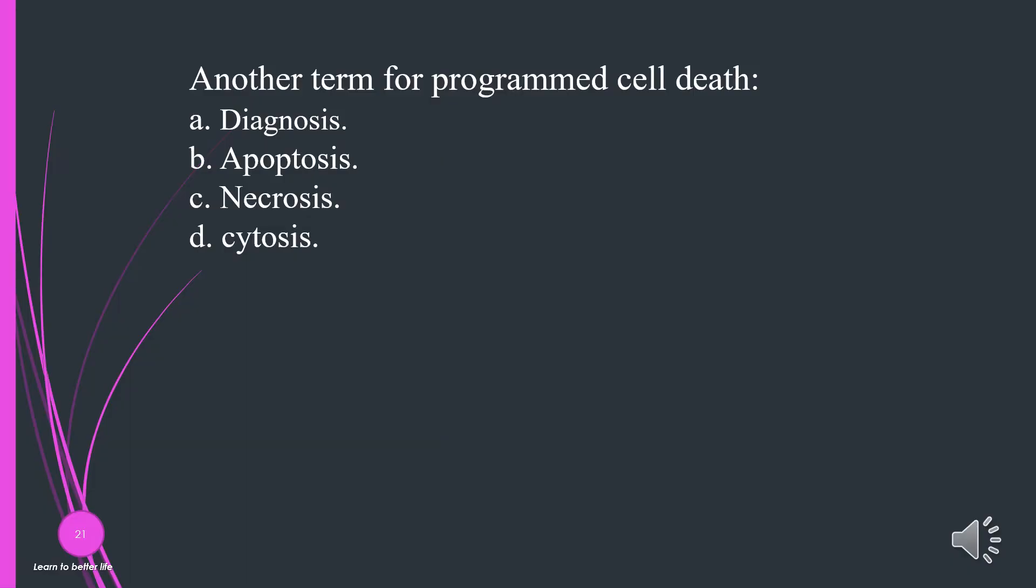Another term for programmed cell death is? A. Diagnosis. B. Apoptosis. C. Necrosis. D. Cytosis. The answer is B, apoptosis.